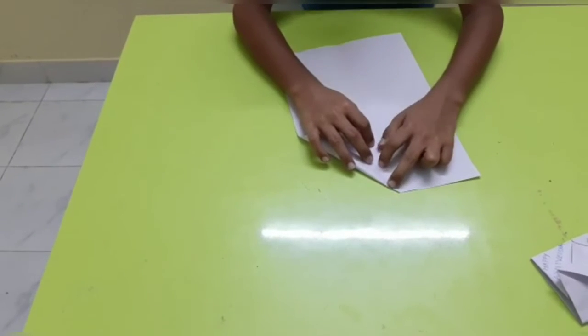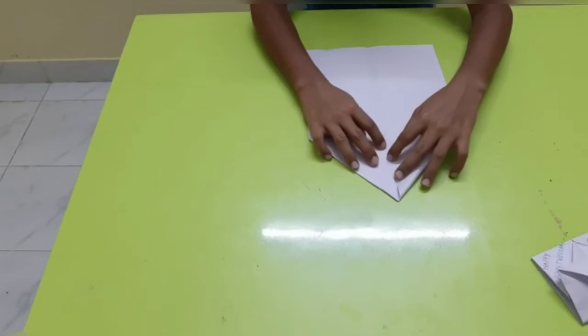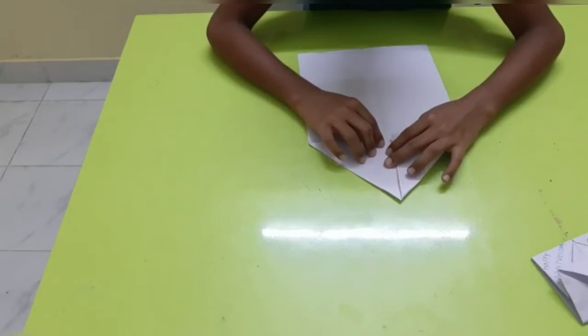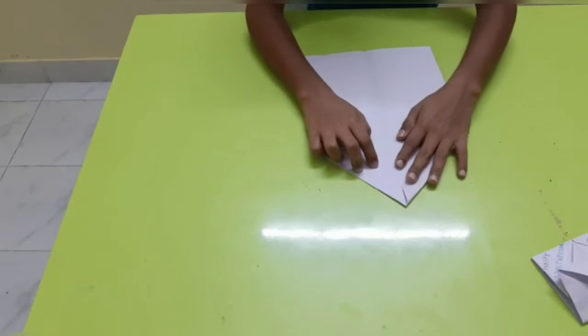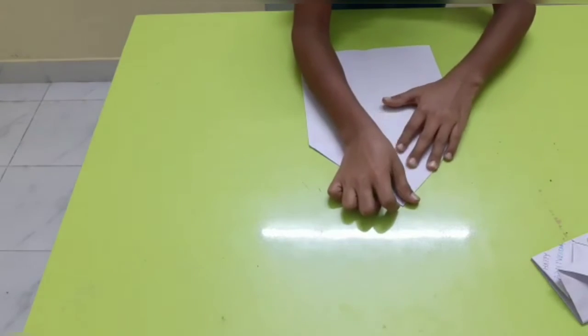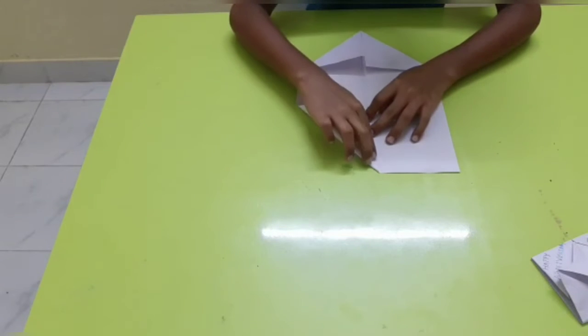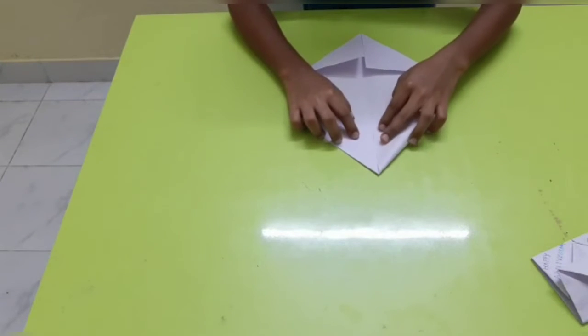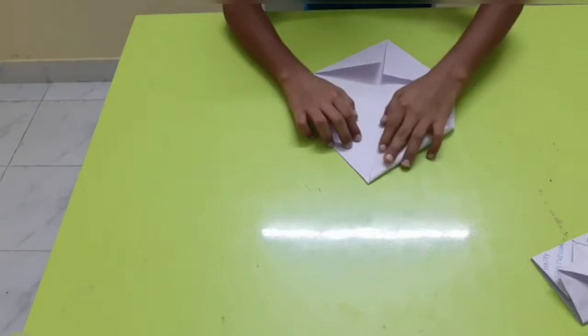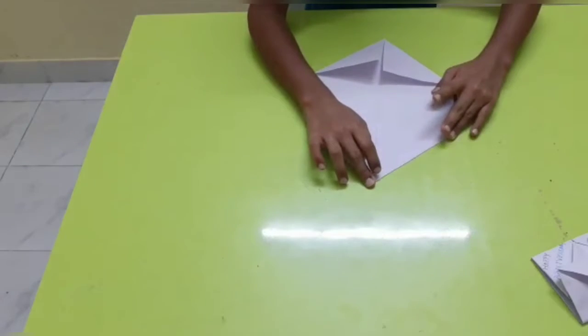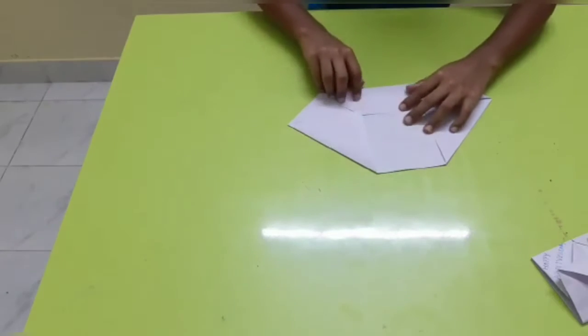And from both sides we will do like this. The one from this side. Now from this side. And now from this end to the middle half. Both the sides we have to do. And now from this side we have to do like this.